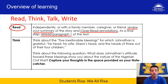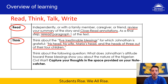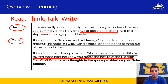Actually reread it again just to be able to complete the next part of the lesson. For the think part today, in the first paragraph you're going to focus on the five inestimable blessings, which were his head, his wife Maria's head, and the heads of three out of their four children. You have to think about the following question: what does Jonathan's attitude toward these blessings show you about the nature of the Nigerian Civil War? And you're going to capture your thoughts in the note catcher.